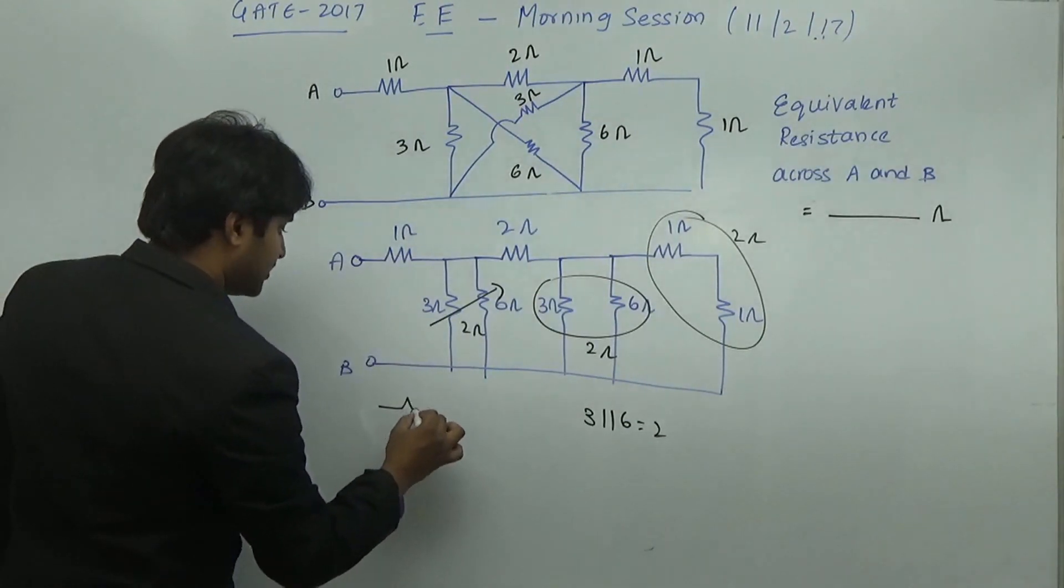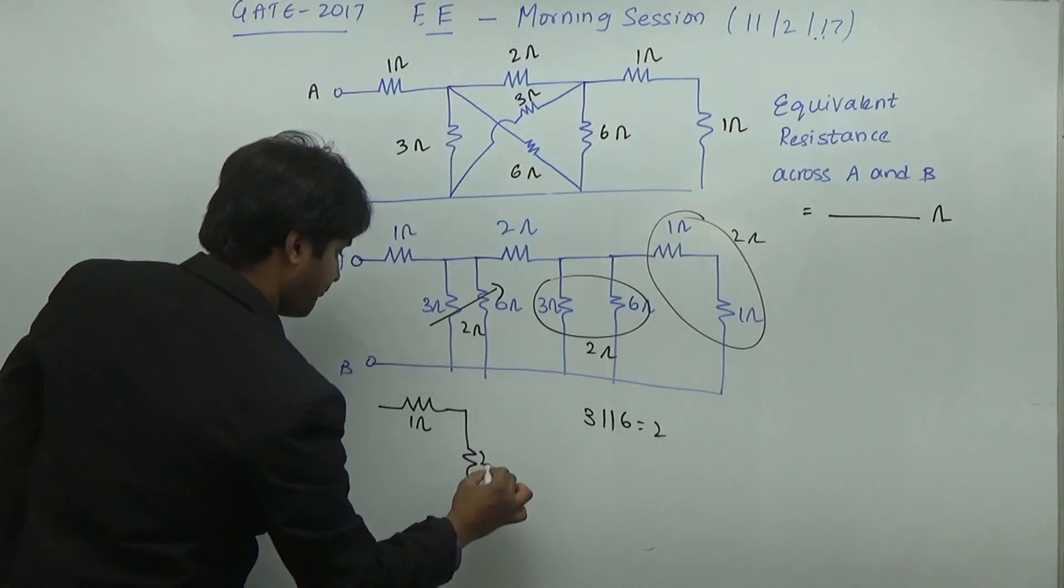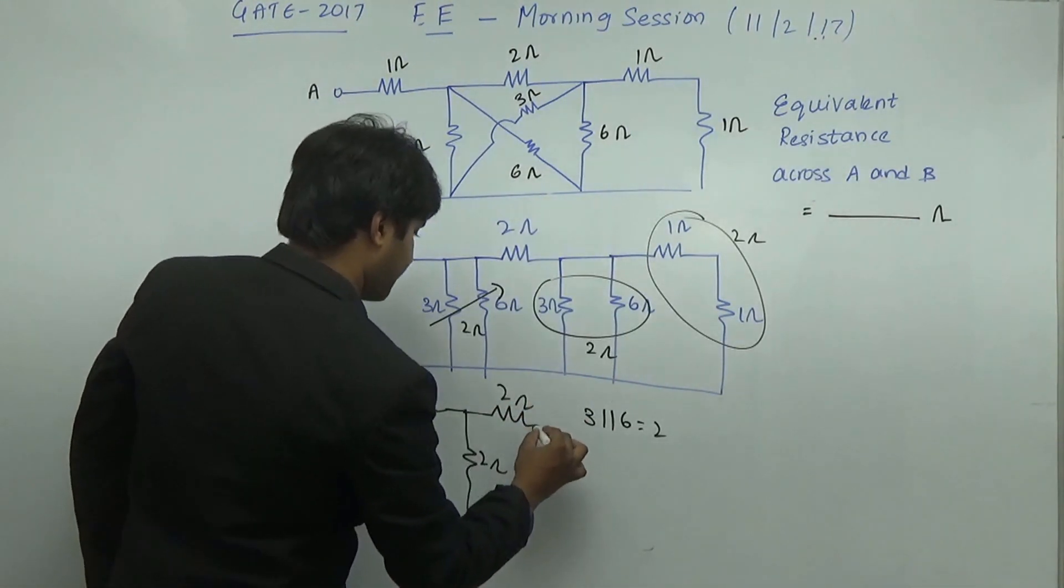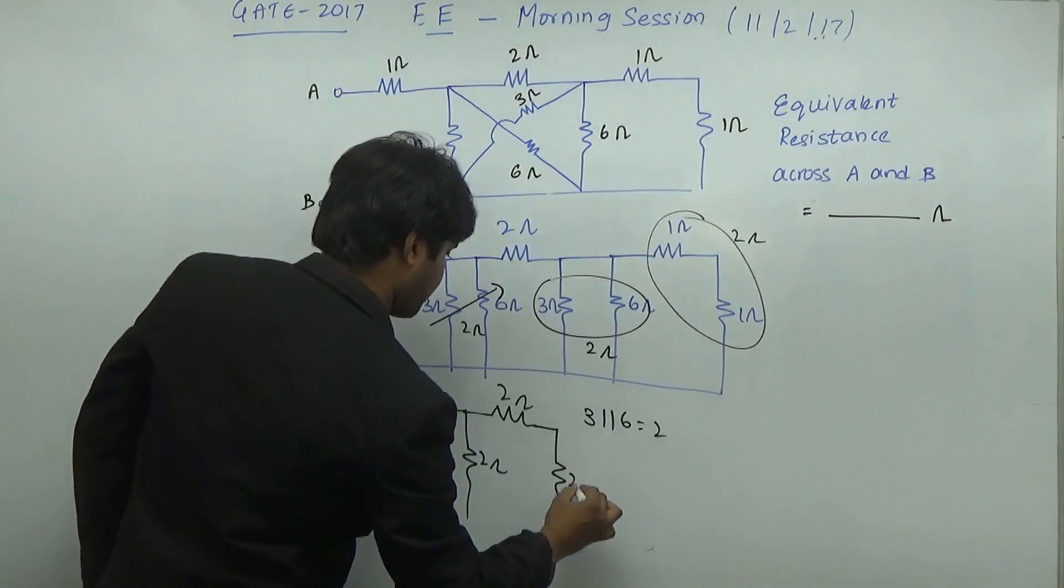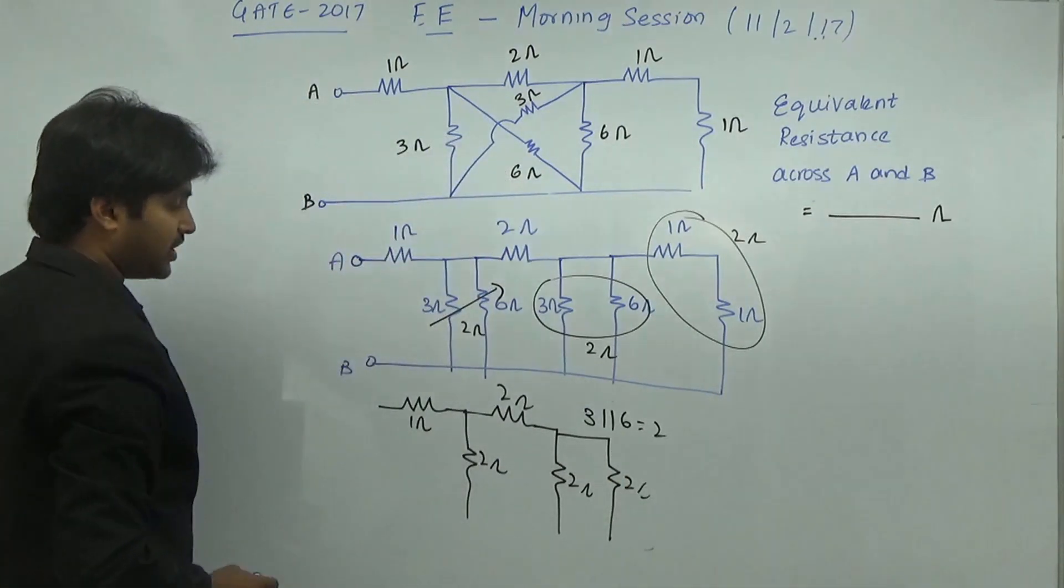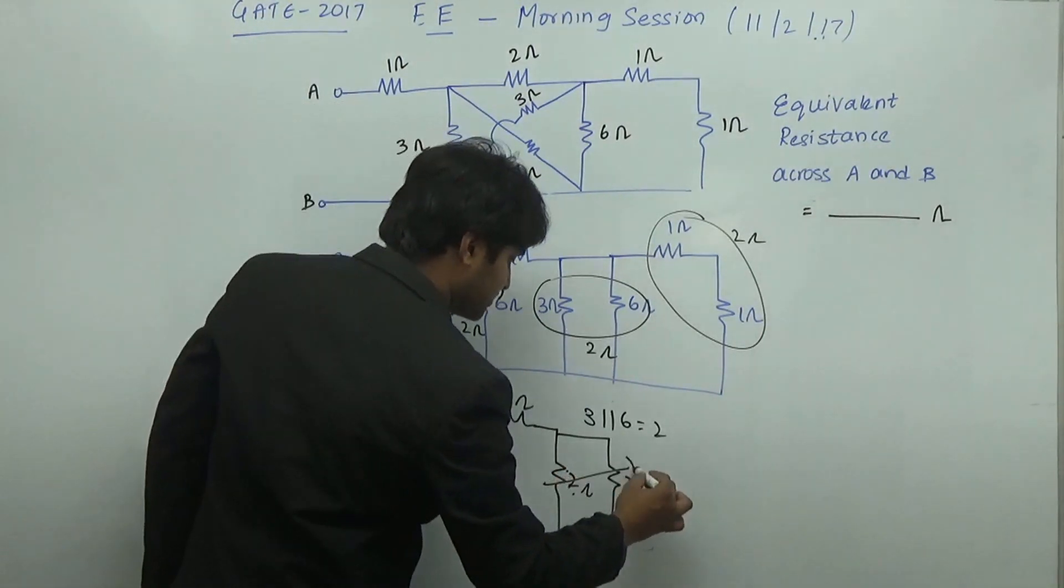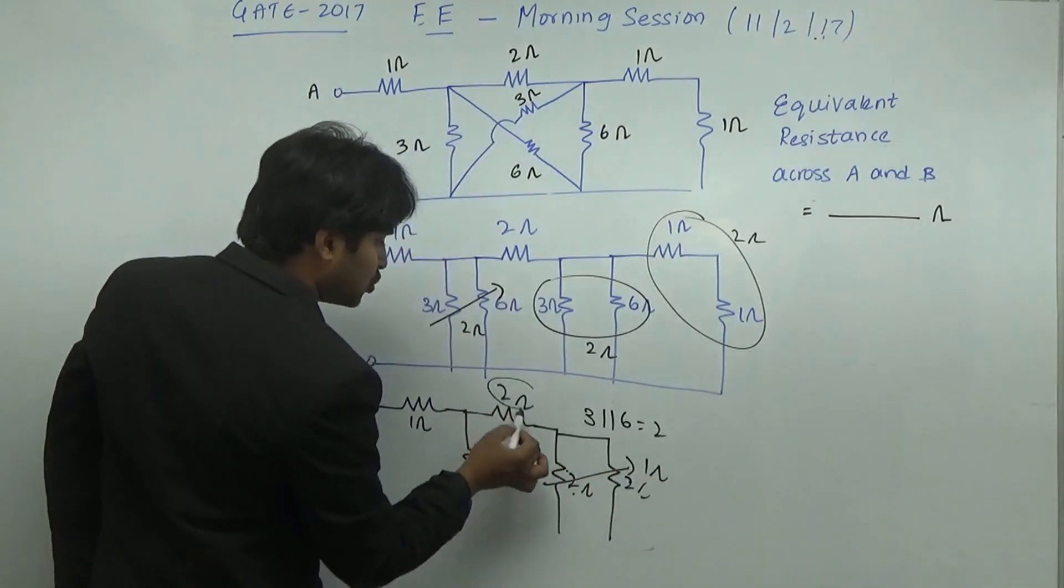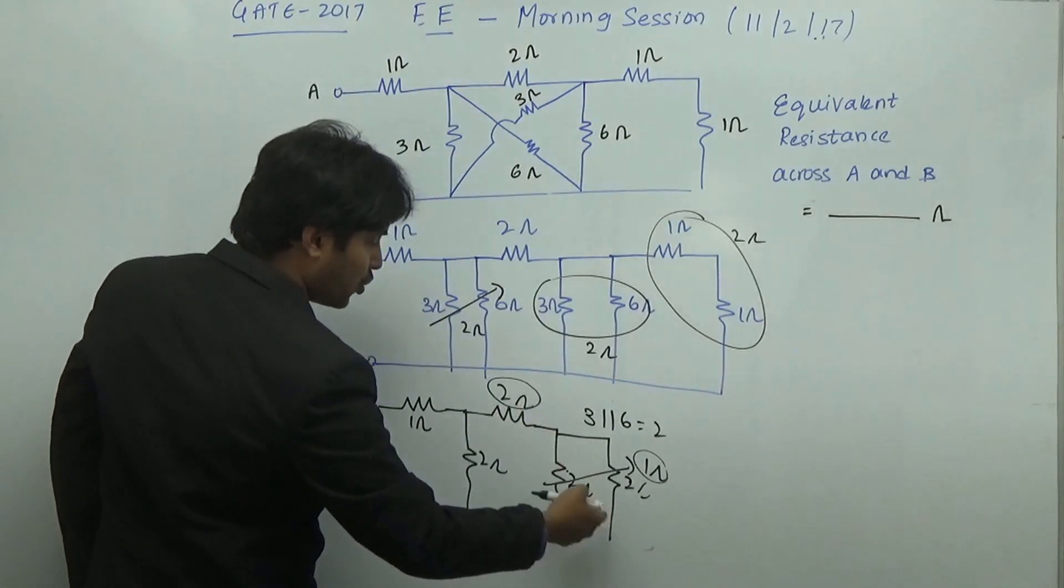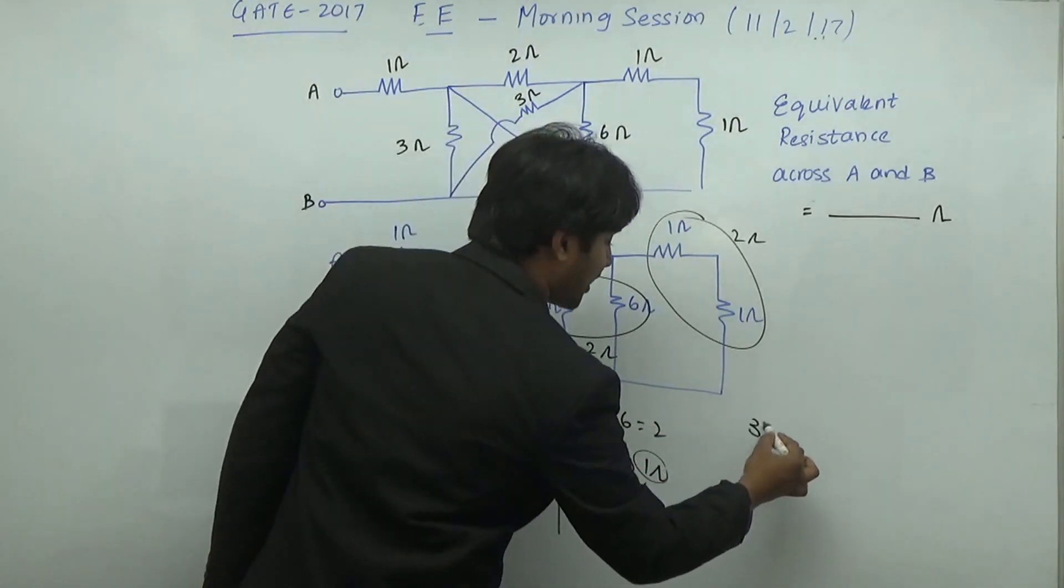So you can have a circuit, 1 ohm, 2 ohm and again 2 ohm. So here if you observe, 2 ohm, 2 ohm in parallel it is going to be 1 ohm. So this is going to become 1 ohm. So 2 ohms and 1 ohm are in series. So it is going to become 3 ohms. So 3 ohms and 2 ohms is going to be parallel. So 3 and 2 are in parallel.